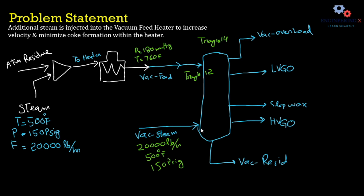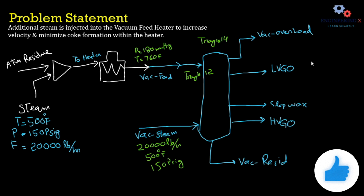After heating to approximately 660°F, the feed is introduced into the vacuum column, which operates at a vacuum of around 180 mmHg at 0°C. Vacuum steam is also introduced at the bottom. This column has no condenser or reboiler. The products are light vacuum gas oil, heavy vacuum gas oil, and slop wax.